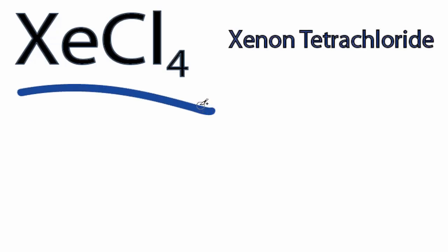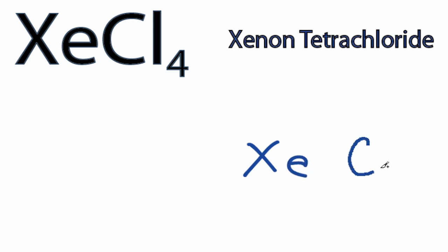This is the XeCl4 Lewis structure. Xenon is the least electronegative, and we'll put that in the center, and we'll put chlorines around it.